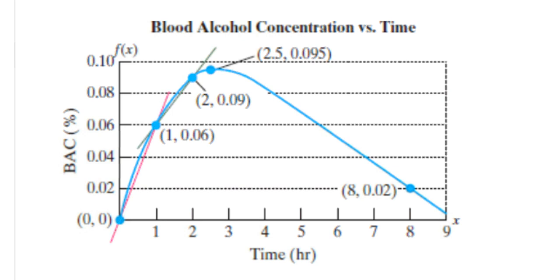So that means to find the average rate of change, we're looking for, in short terms, our slope. So we're looking for the change that occurs in the y values over the change that occurs in the x values.